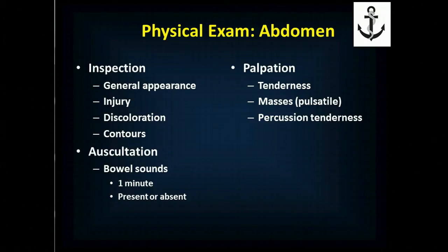Then palpate: check for tenderness — does it hurt where you push? Palpate for masses and describe whether they have a pulse or not. A pulsatile mass in the midline of the abdomen is very concerning for an abdominal aortic aneurysm, where the aorta balloons out. If it's pulsatile and tender, with significant abdominal pain radiating to the back or down into the femoral creases where the legs join the body, the patient probably has a rupturing triple-A and needs surgery immediately.